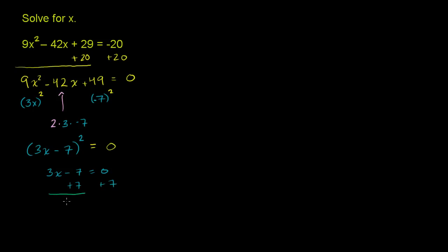Add 7 to both sides: 3x = 7. Divide both sides by 3, and we get x = 7/3.